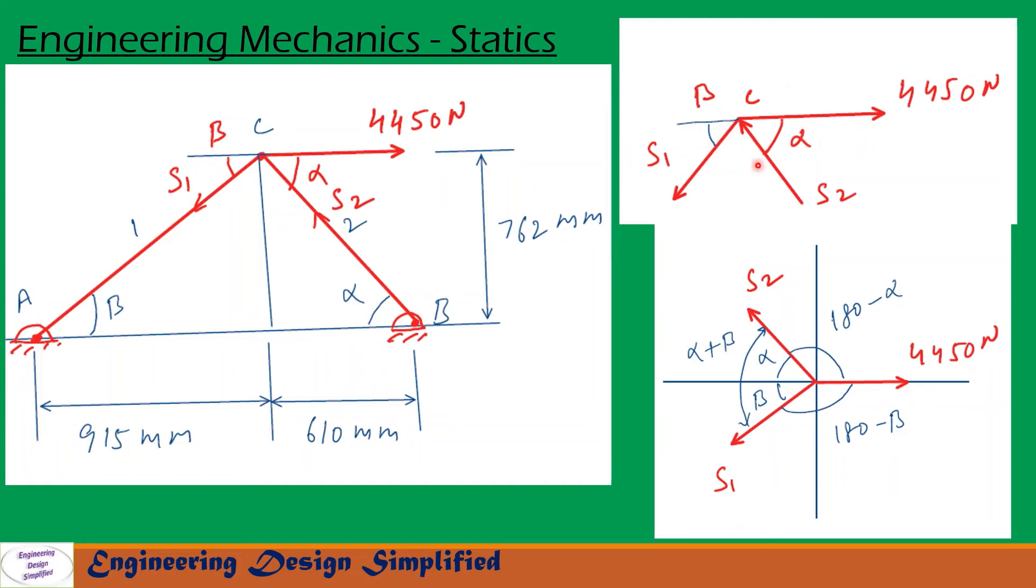Now let us transfer all these forces and reactions to XY plane. So on this XY plane we have horizontal load 4450 Newton acting towards this direction, and this S2 is acting towards this direction. Angle between S2 and horizontal is alpha, and S1 is acting towards this direction. Angle between S1 and horizontal is beta.